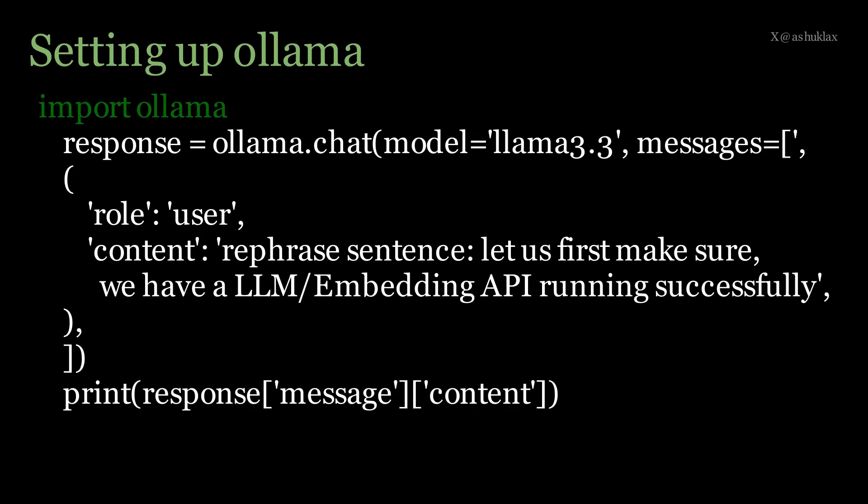Now let's move on to the Python scripts. Here you write 'import ollama' — this imports the Ollama Python library, which provides a simple interface to interact with the models. If you want to send a chat message, you write: response = ollama.chat(). As you can see, the chat method accepts a couple of parameters. The first parameter is model, set to 'llama3.3', and you can use any of the other models you have already installed.